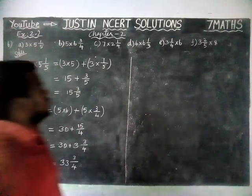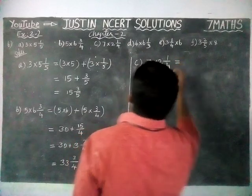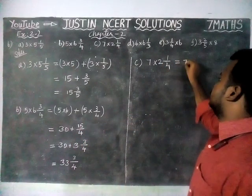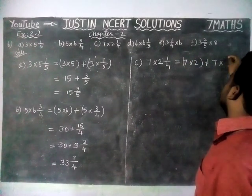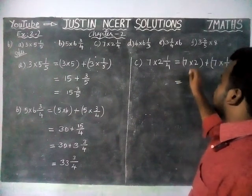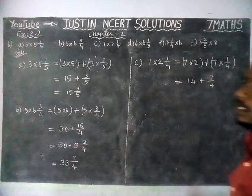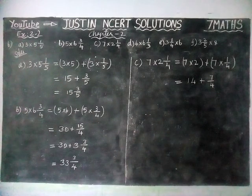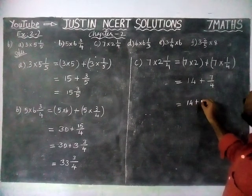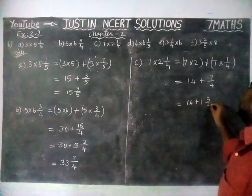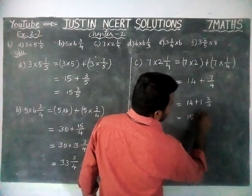Now we are going to check option C: 7 into 2¼ is equal to. We have to multiply the whole part: 7 into 2 plus 7 into 1 by 4 is equal to. 7 twos are 14 plus 7 ones is 7 divided by 4. This is an improper fraction, we have to convert into mixed fraction. In 7 we have 1 four, and remaining 3, so 1 and 3 by 4. Now we add the whole part: 14 plus 1 and 3 by 4, giving us 15 and 3 by 4.